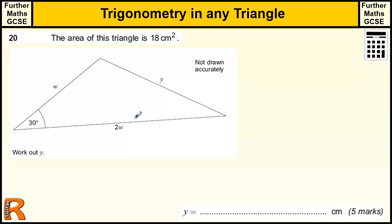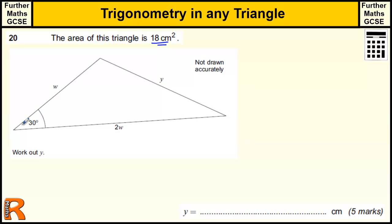To start with, I'm guessing we need to work out what W is first and then use that to find Y, maybe using the cosine rule. Because we are told the area of the triangle is 18 and this is any triangle — it is not a right angle triangle, it is not an easy one to do the area of. We should be familiar with the formula for the area of a triangle where we are given an angle and the two sides either side of it.